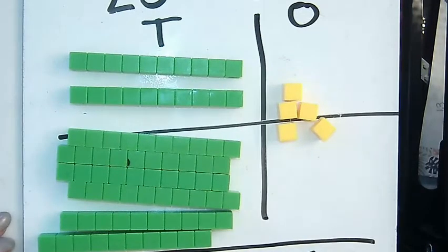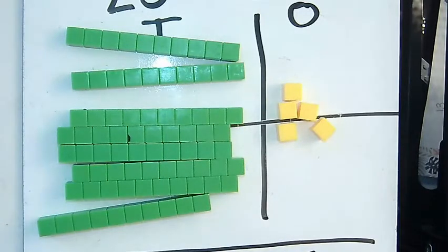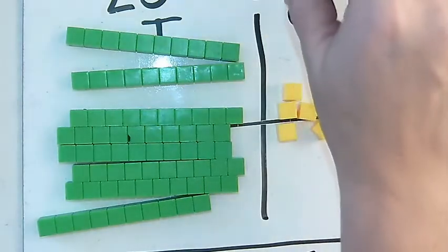So then down here, I'm going to write that I have five 1s and then I have 1, 2, 3, 4, 5, 6, 7, 8, 8 10s. So my answer is 85.